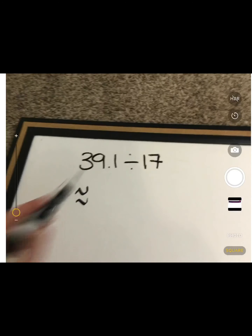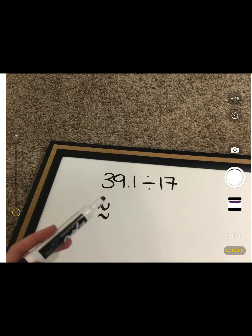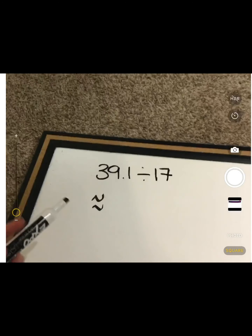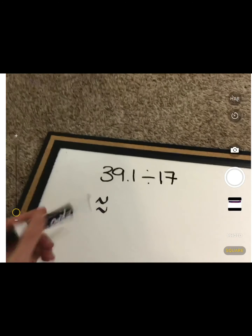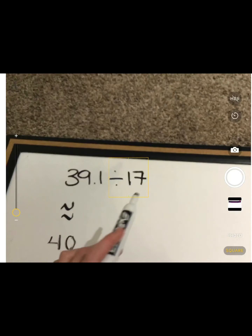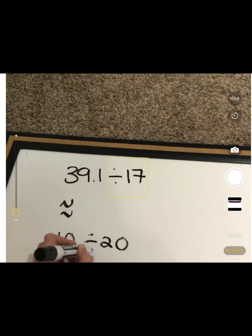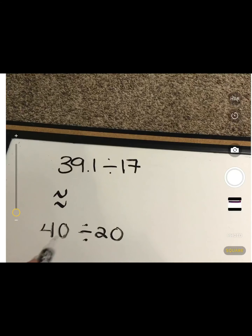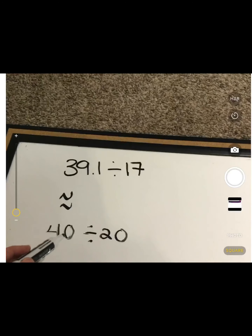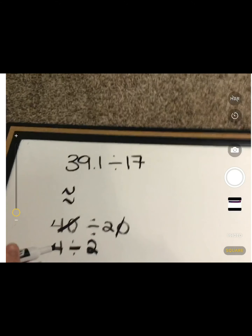When looking at 39 and 1 tenths, if I were to estimate this number to the nearest whole number, an easier number for me instead of 39 — because 39 is kind of not a fun number to work with — I'm going to round this up to 40. And then 17, since it's not a very fun number to work with, I'm going to round it up to 20. Those are much easier numbers to work with, because that is the same as dividing 4 and 2.